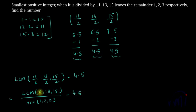So LCM of 11, 13, and 15 will actually be the product of 11, 13, and 15, and at the same time this 15 doesn't have any common factors with either 11 or 13.